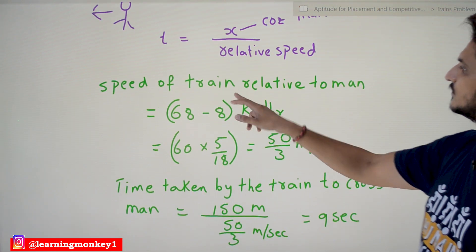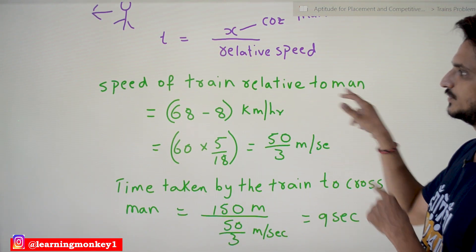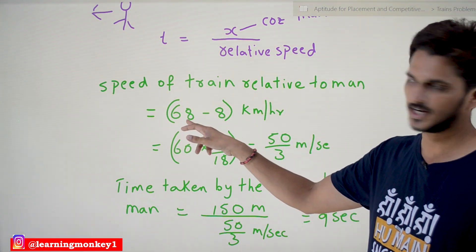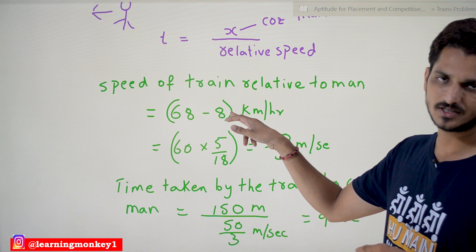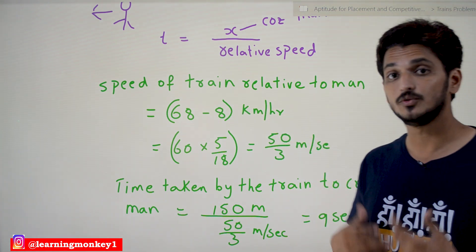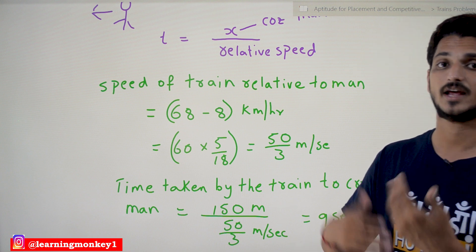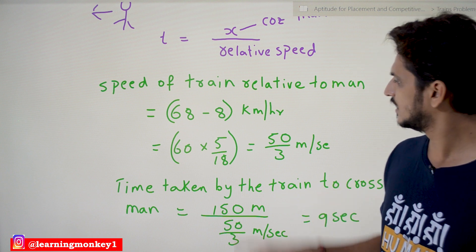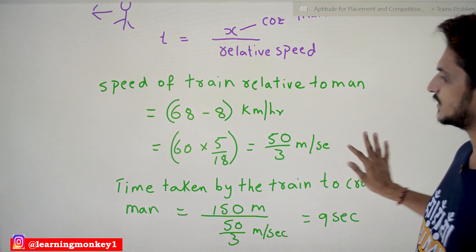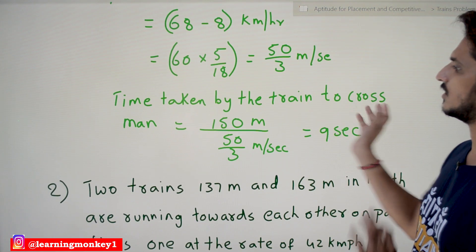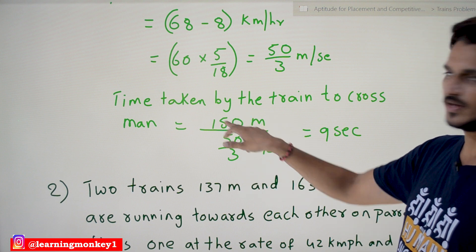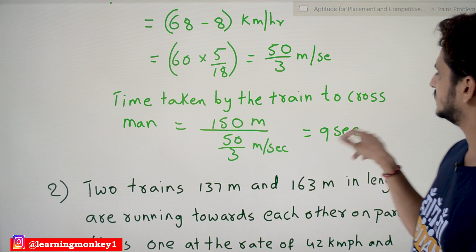Speed of the train relative to the man = 68 minus 8 = 60 kilometers per hour. Converting to meters per second: 60 × 5/18 = 50/3 meters per second. Time taken by the train to cross the man: time = distance / speed = 150 / (50/3) = 9 seconds.